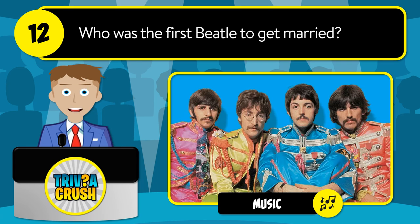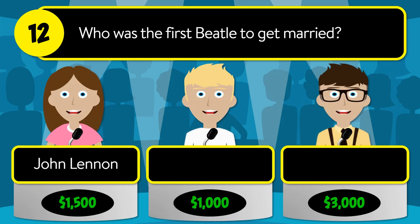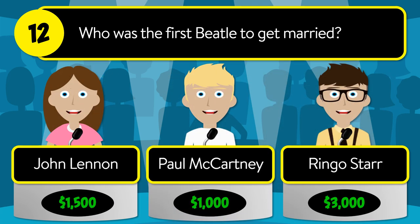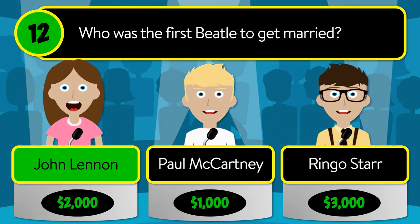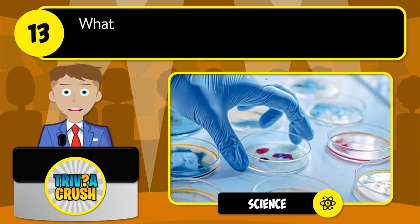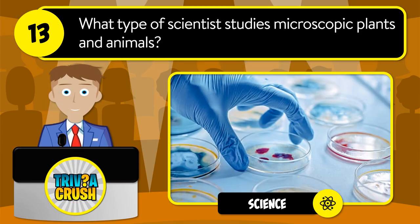Question number twelve: who was the first Beatle to get married? Was it John Lennon, Paul McCartney, or Ringo Starr? The correct answer is John Lennon.